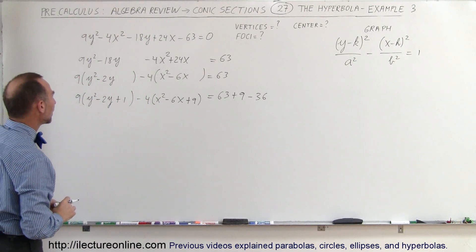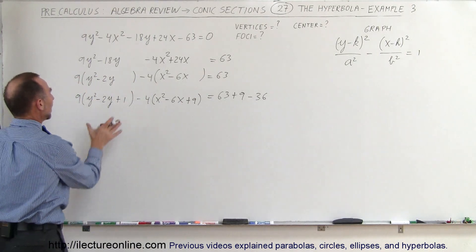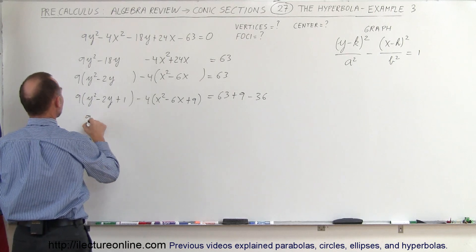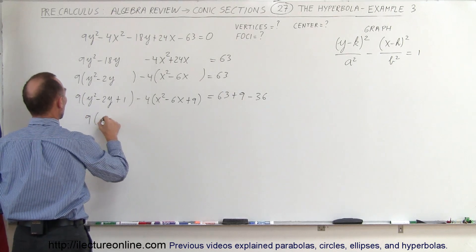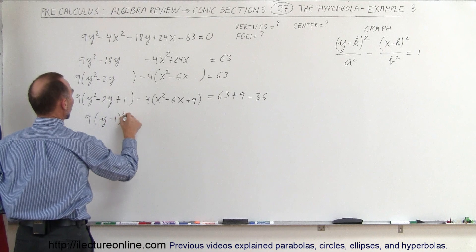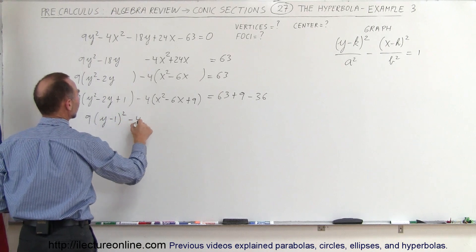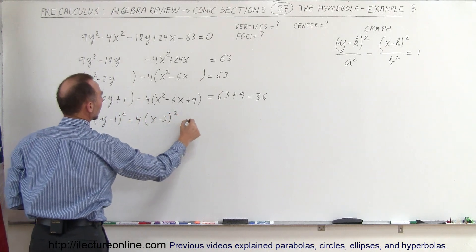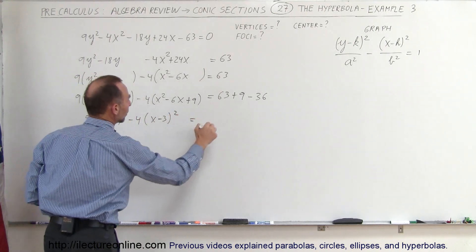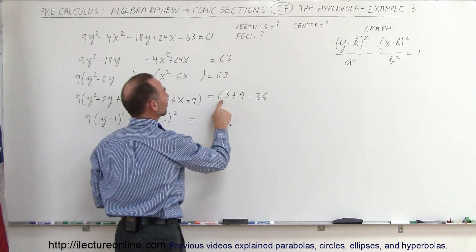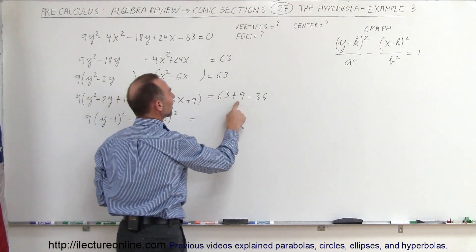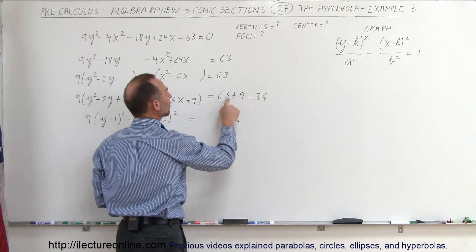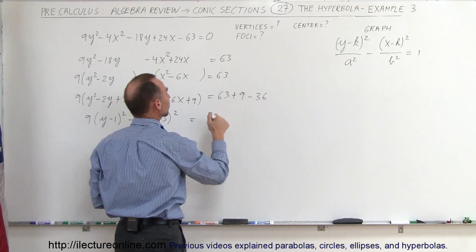Now we write each group as the square of a binomial: 9 times (y minus 1) squared, minus 4 times (x minus 3) squared, equals the right side. That is 63 plus 9 is 72, minus 36, which equals 36.